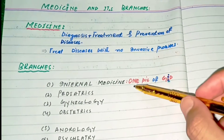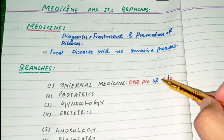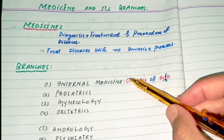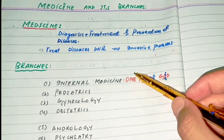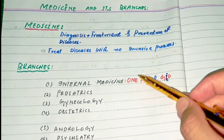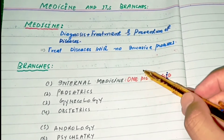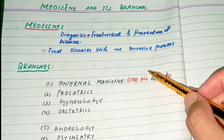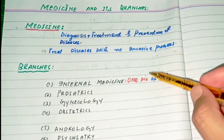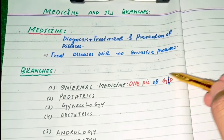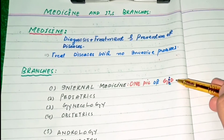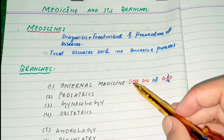The subspecialties of internal medicine include oncology, nephrology, endocrinology, pulmonology, infectious disease, cardiology, gastroenterology, and dermatology. These are the subspecialties you can easily remember in internal medicine.